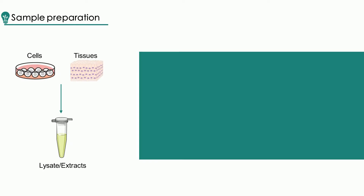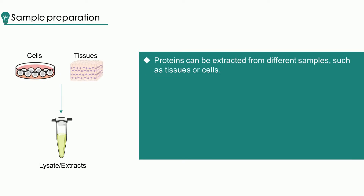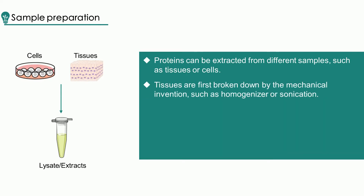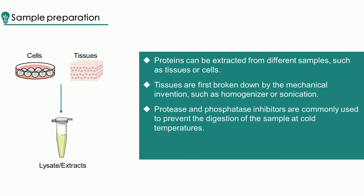Proteins can be extracted from different samples, such as tissues or cells. Since tissue samples display a higher degree of structure, the tissues are first broken down by mechanical means, such as a homogenizer or sonication. Protease and phosphatase inhibitors are commonly used to prevent digestion of the sample at cold temperatures. After protein extraction, it is important to measure the concentration of proteins, which determines the mass of proteins loaded into each well. A spectrophotometer is often used for protein concentration measurement.